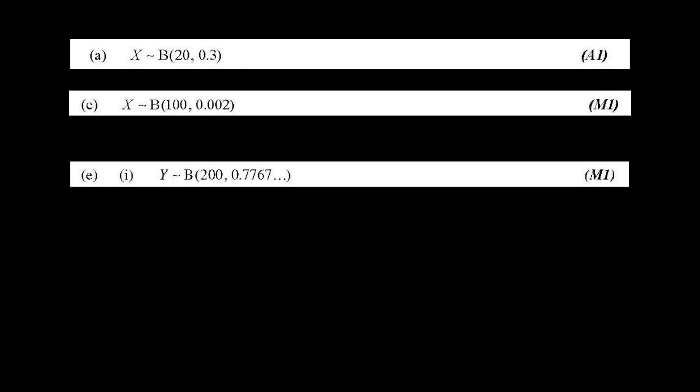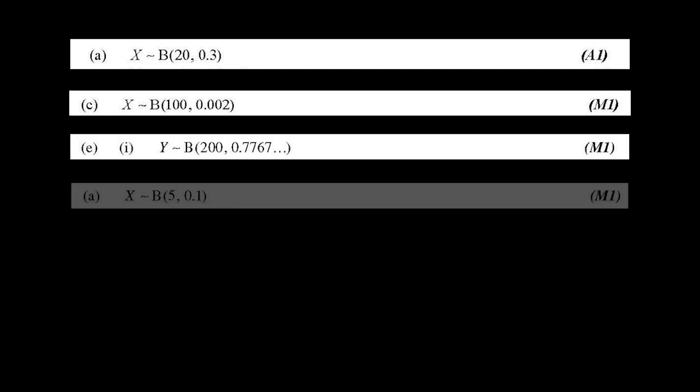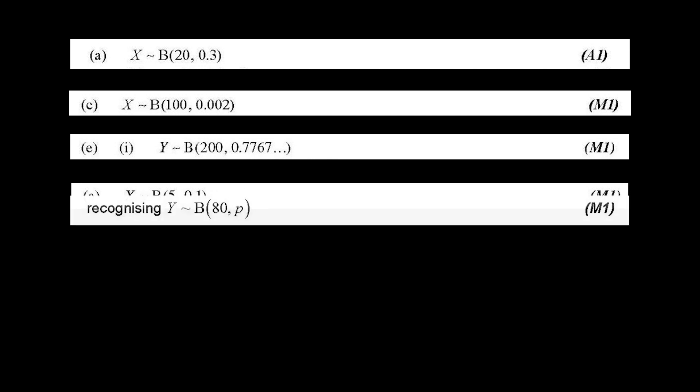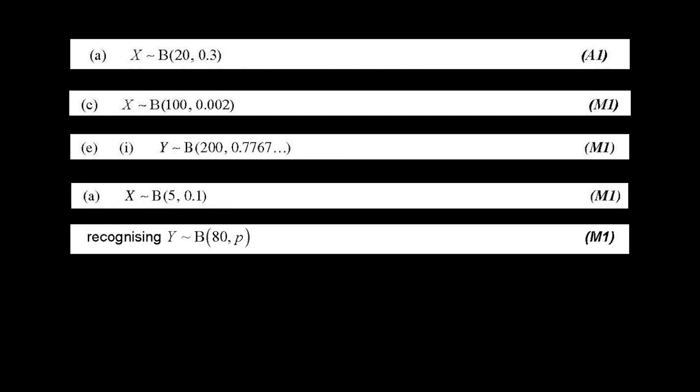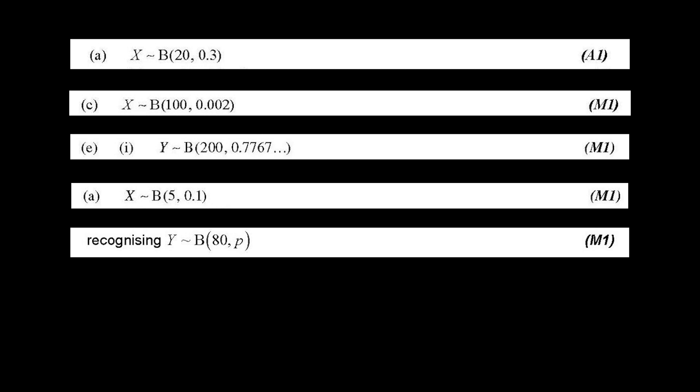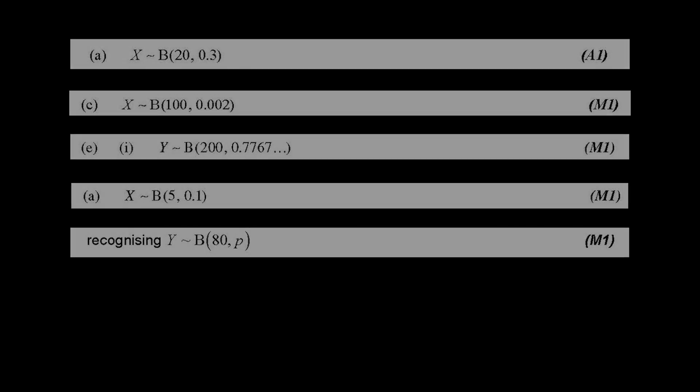Here's another great tip for statistics. In normal distribution questions, the problem will clearly state that the variable follows a normal distribution. However, there is no such mention for binomial distribution questions. Even if you just recognize this fact, you will receive one point. So be sure to write x follows binomial distribution of n p even if your answer is incorrect, as you can still receive a partial score of one point.